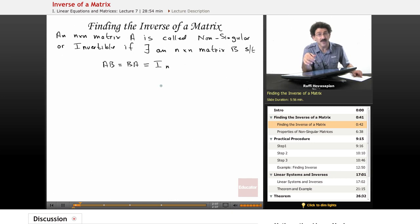So this is the definition: an n by n matrix A is called nonsingular or invertible if there exists an n by n matrix B such that this holds. A times B equals B times A gives you the identity matrix.